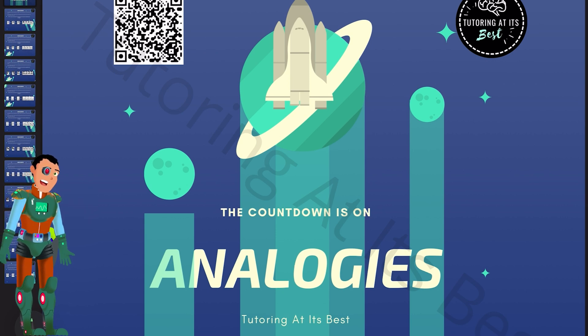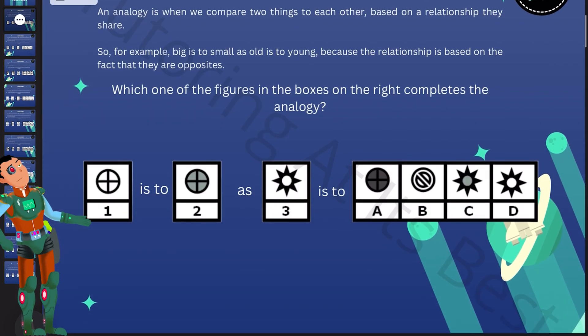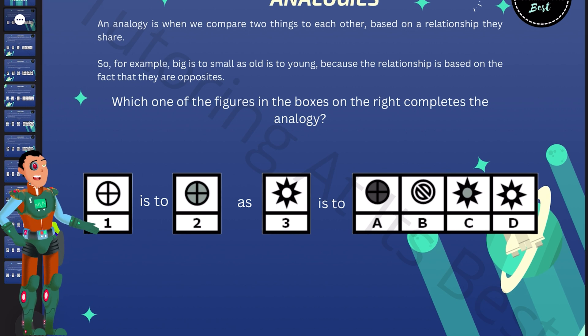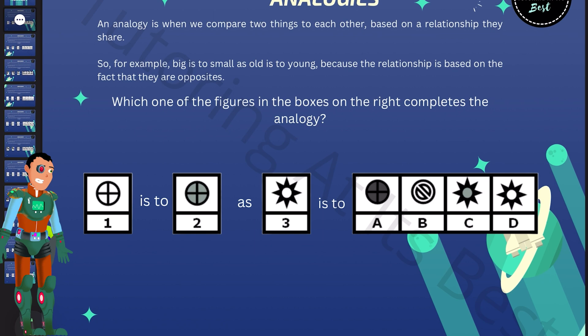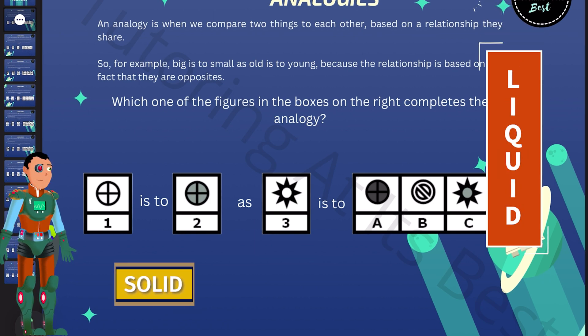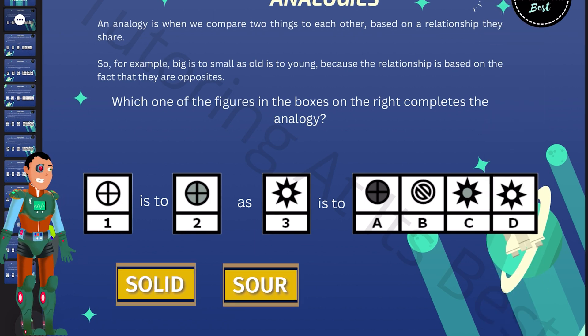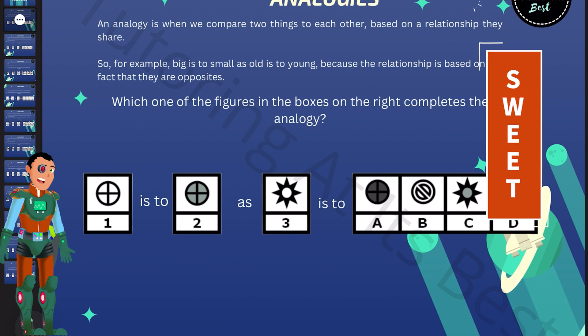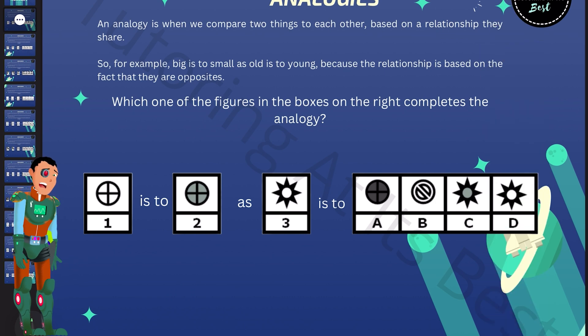So what are analogies? Well, to solve the question you have to look at the relationship between two things. They could be words, they could be shapes. Now when we're comparing these two things there is a relationship that they share. So for example, solid is to liquid as sour is to sweet because the relationship is based on the fact that they are opposites.